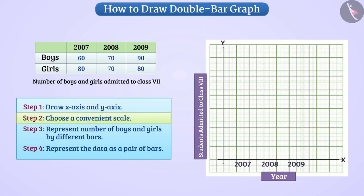Step 2: For our convenience, we will choose a convenient scale. Here, we can take 1 unit equal to 20 students. According to the scale, we will show numbers on the y-axis.